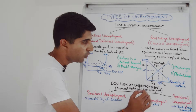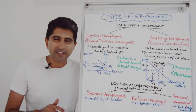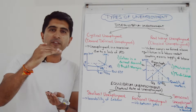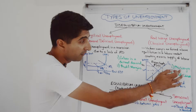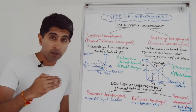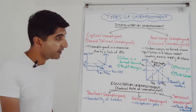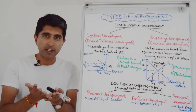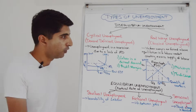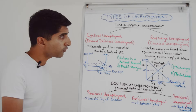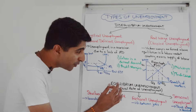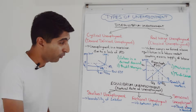Why can this happen? How can wages be forced above equilibrium and not come back down? Well, if governments intervene with high minimum wages, that could do it. But also strong trade unions that push wages up can also do it. So those are the two types of disequilibrium unemployment. Let's now move into equilibrium unemployment.